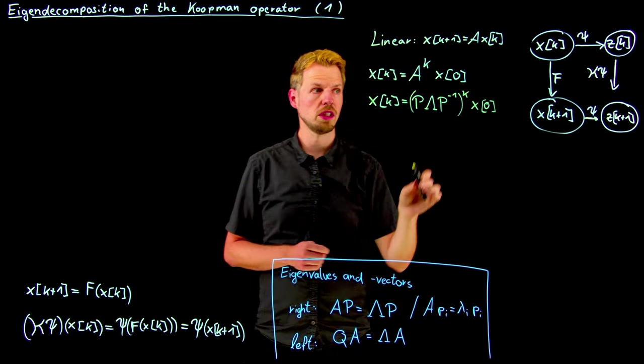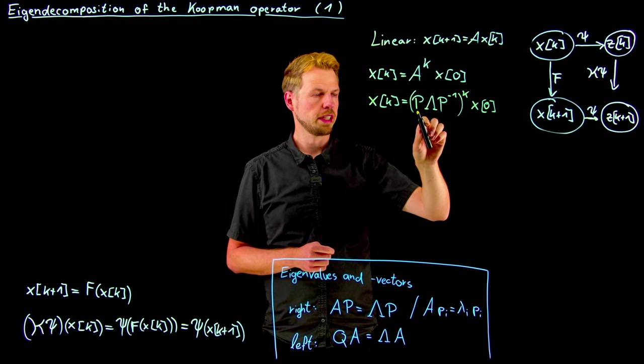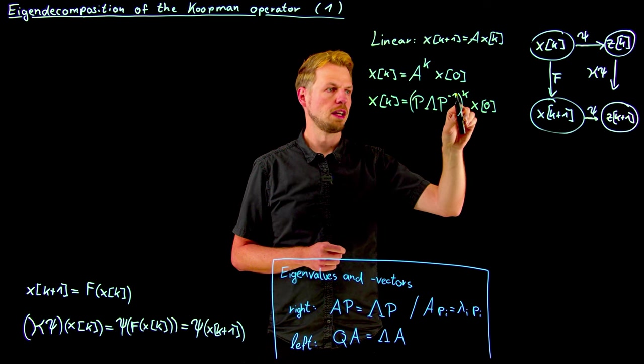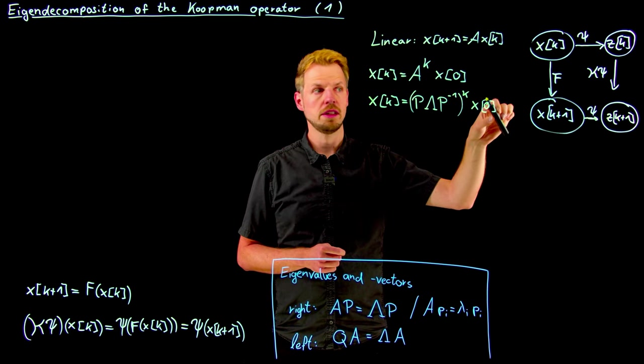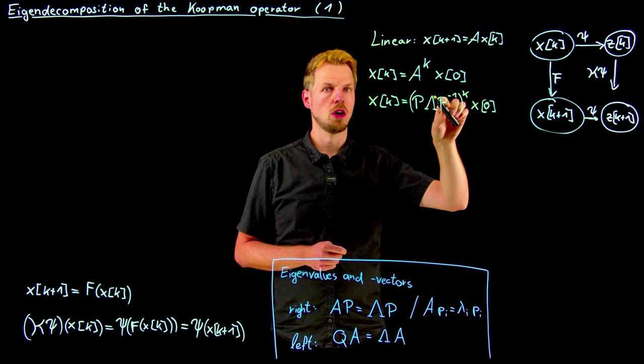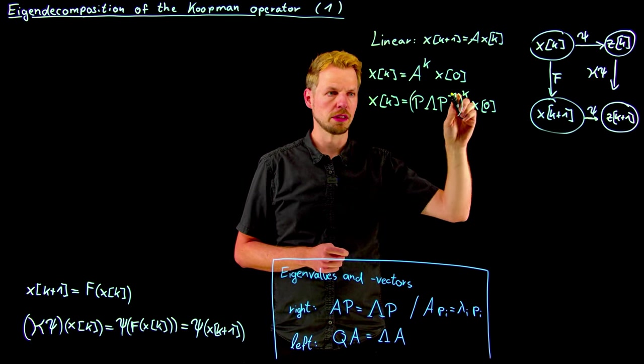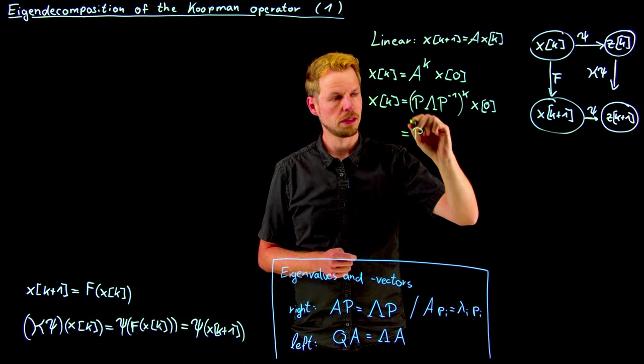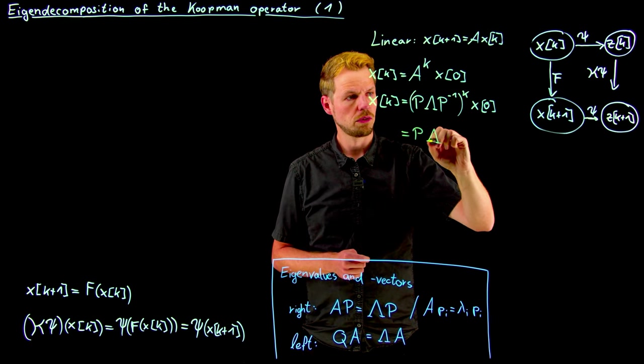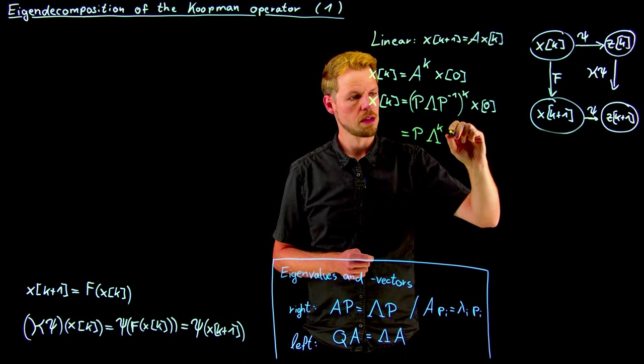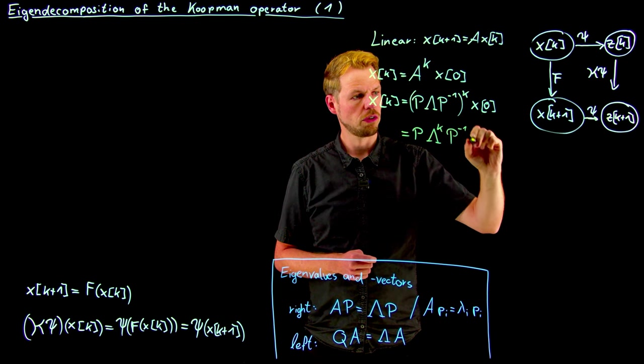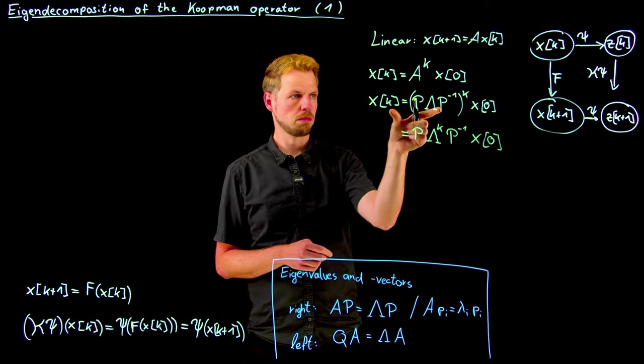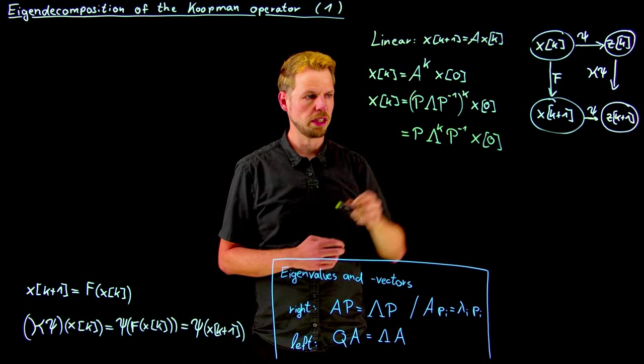And so you see if I raise this to power k, what I get is P times lambda times P inverse times P times lambda times P inverse times P times lambda P inverse. And so you see we always have in the middle P inverse times P products. So what we get in the end is P lambda raised to the kth power P inverse x_0, simply by multiplying this and then cancelling out P times P inverse.